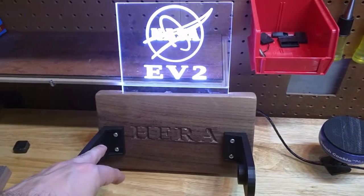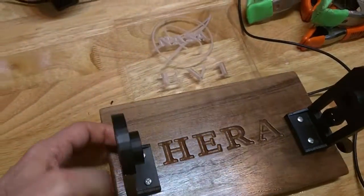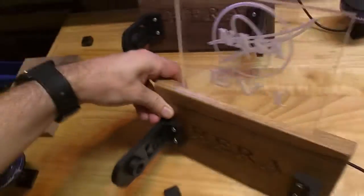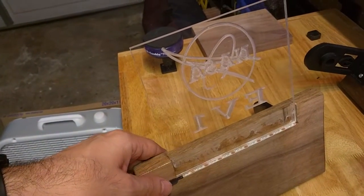This is a 90-degree V-bit in the acrylic, machined I think at 50 inches a minute. I used F-Engrave for all the V-carving.